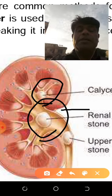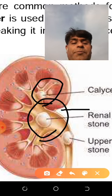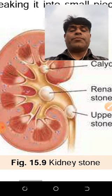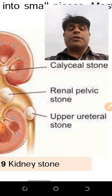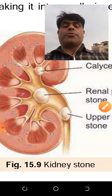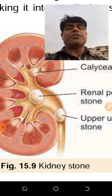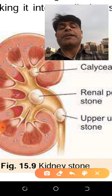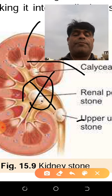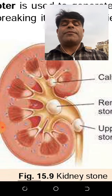Stones can occur anywhere in the kidney. They may be in the renal pelvis, the ureter, the urinary bladder, or the urethra. A stone in the ureter is clearly visible in the diagram. The renal pelvis is the only cavity in the kidney, which is why the nephron is not considered the structural unit — nephrons are present in the cortex and medulla but not in the renal pelvis.